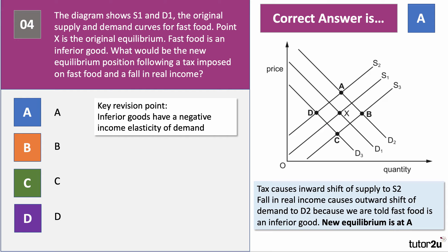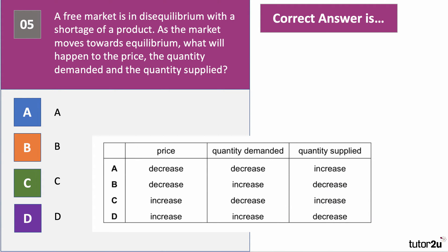Almost halfway through — take a look at question number five. A free market, a market without any government intervention, is in disequilibrium with a shortage of a product. As the market gravitates towards equilibrium, what will happen to the price, the quantity demanded and the quantity supplied? Have a go at question number five.